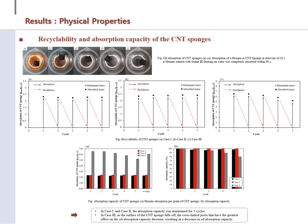The prepared absorbent showed oil absorption capacity up to 6.7 g of oil per g of CNT with Case 3. But the compressive strength to maintain the shape of the absorbent showed the lowest value. Cases 1 and 2 showed similar oil absorption ability of about 2.4.